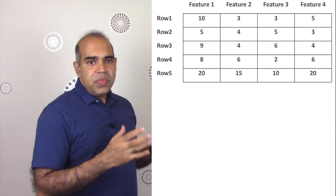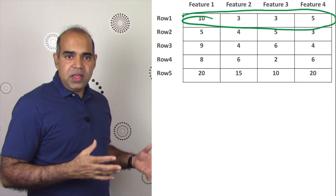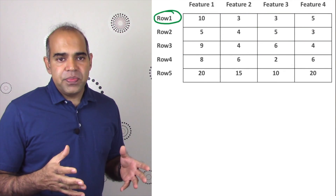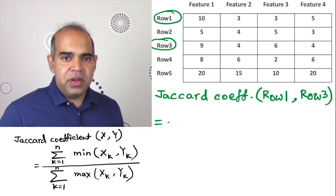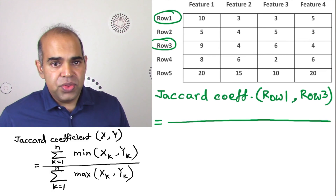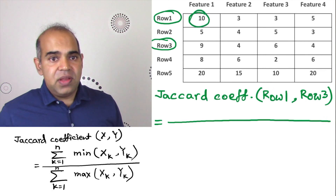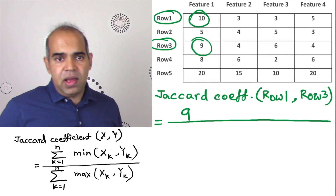Suppose we have a four-dimensional dataset — that is, four features or four columns. Let us compute the Jaccard similarity between row 1 and row 3. Row 1 contains 10, 3, 3, 5 and row 3 contains 9, 4, 6, 4. For the numerator, we take the minimum in each dimension: in feature 1, min(10, 9) = 9; in feature 2, min(3, 4) = 3; in feature 3, min(3, 6) = 3; in feature 4, min(5, 4) = 4. So the numerator is 9 + 3 + 3 + 4.